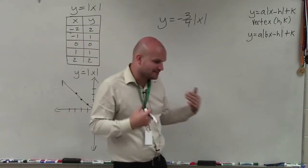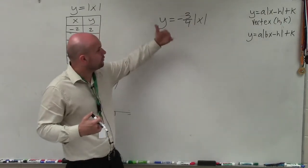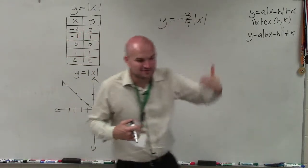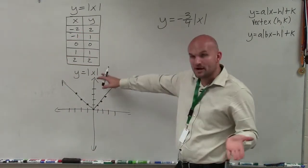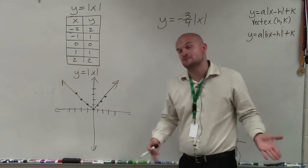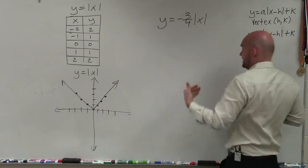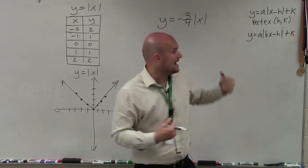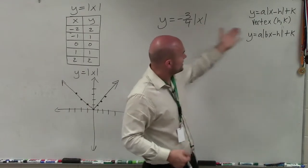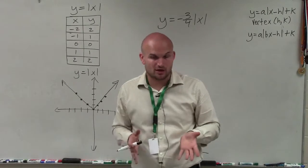To graph this absolute value equation, we need to identify what transformations are affecting our graph compared to our parent graph, which is y equals absolute value of x. The only thing changing is I'm multiplying my absolute value by negative three-fourths. Since I'm not adding or subtracting inside my absolute value or outside, I know I'm not going to be shifting the graph left or right at all.